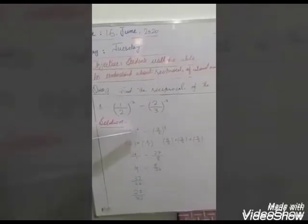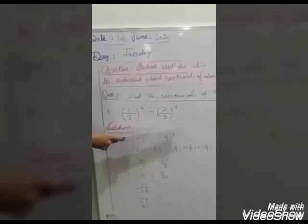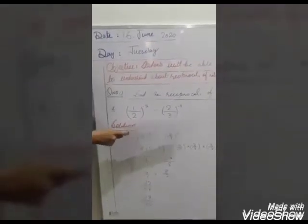How to convert? Simply take the reciprocal of 1 by 2. The reciprocal of 1 by 2 becomes 2 by 1 whole power 2. This expression then becomes: 2 by 1 whole power 2, divide by 3 by 2 whole power 3.